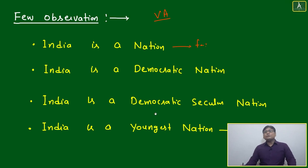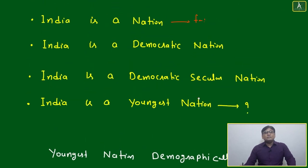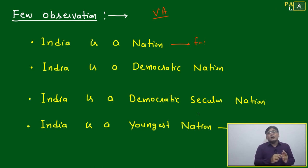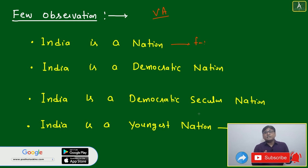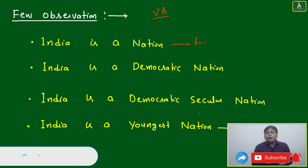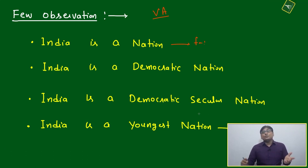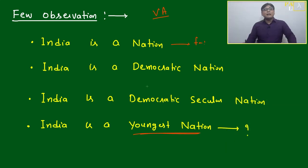Up to here it was good. But India is a youngest nation — which way? Because we can say 'youngest nation' in multiple ways. Maybe it got freedom very recently, or India's population is of very young age, or India may be very new in some particular field. Which way is it the youngest nation? Some further information is needed here.